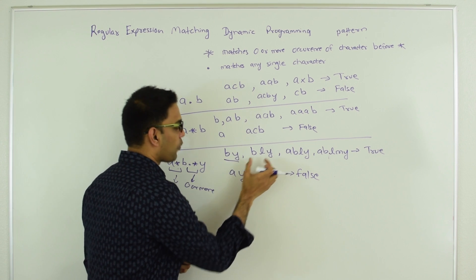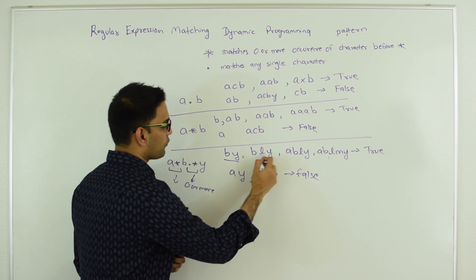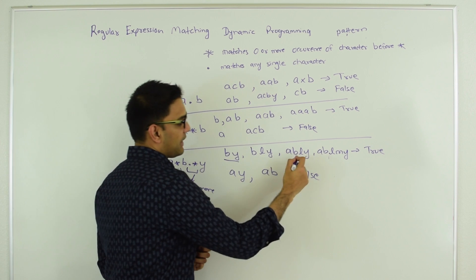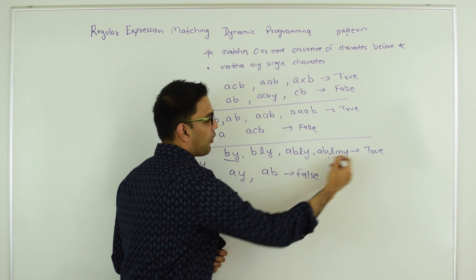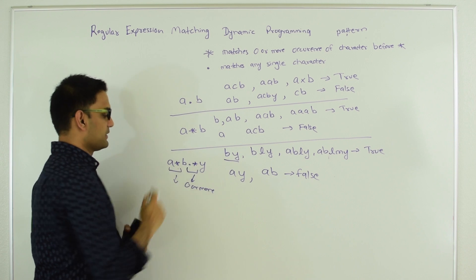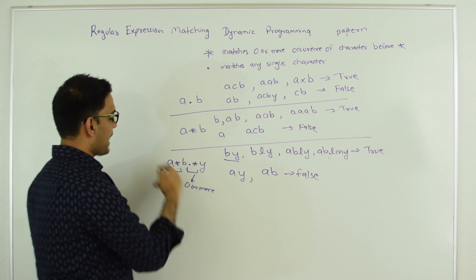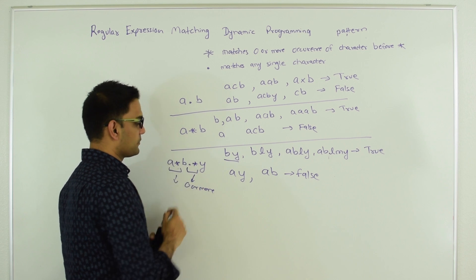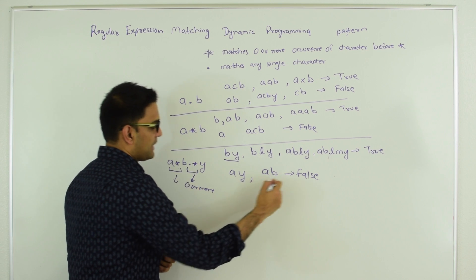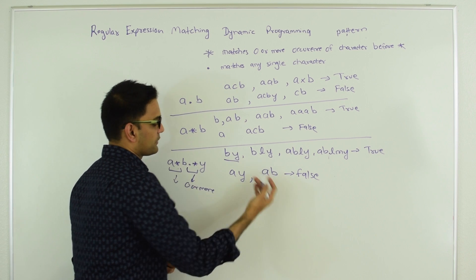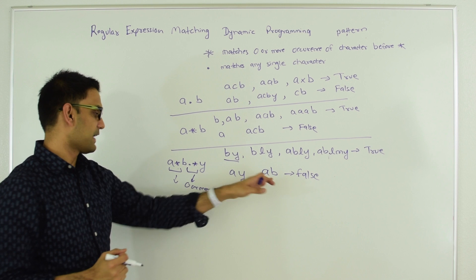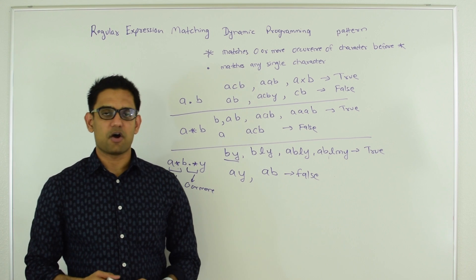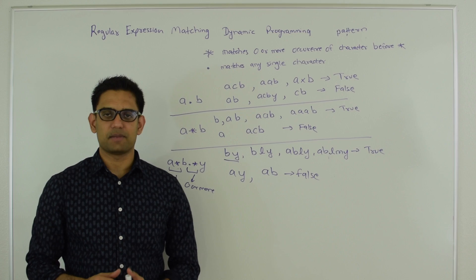BLY also matches because we have one L between B and Y and zero occurrences of A. Similarly ABLY and ABLMY all match this pattern. On the other hand, AY is not a match because we need a B. AB is not a match because we need a Y. So those texts don't match this pattern. Next let's see how we solve this using dynamic programming.